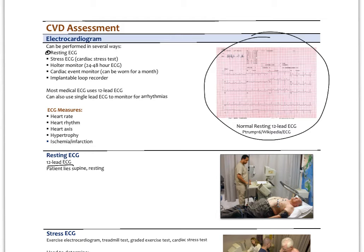The stress ECG, also known as the cardiac stress test, has all leads taped to the body while readings are taken on the treadmill, letting us see how the heart performs under stress. The Holter monitor provides a 24 to 48-hour ECG reading, helpful for capturing arrhythmias that occur randomly during the day. There's also a cardiac event monitor worn for a month — when the patient feels an abnormal heart rhythm, they press a button to start recording the ECG tracing, helping doctors identify the specific arrhythmia.